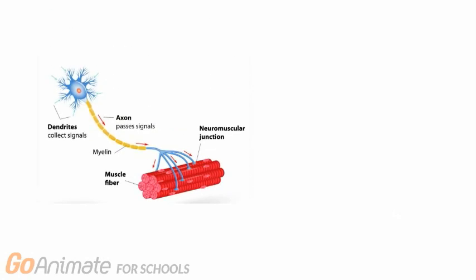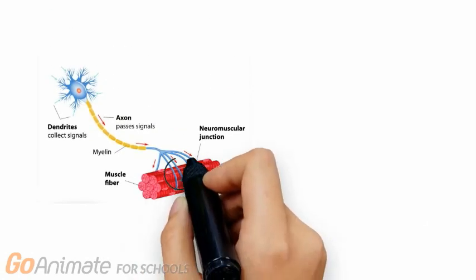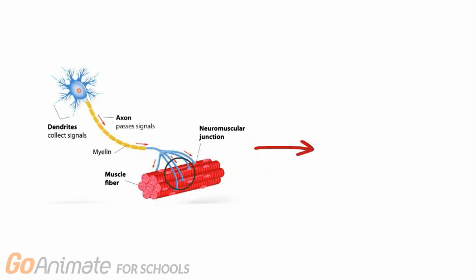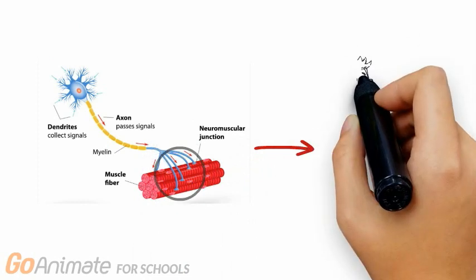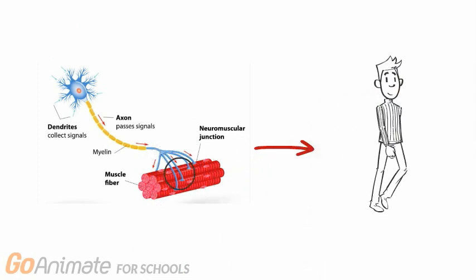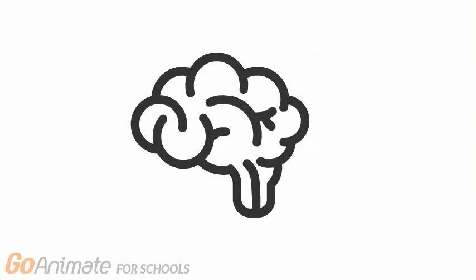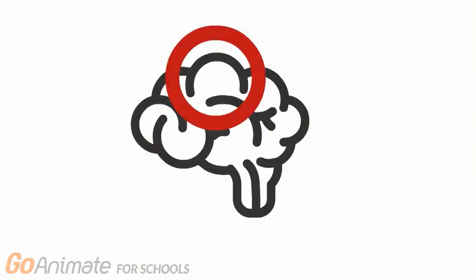Our motor neurons work in this same fashion and they are the ones responsible for sending signals to our muscles. These signals lead to the muscles contracting and are what allows us to move voluntarily. The signals are controlled by the motor cortex, which is the area in the brain responsible for voluntary movement.